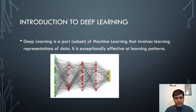Deep learning is a subset of machine learning that involves learning representations of data and is exceptionally effective at learning patterns. Deep learning involves three or more neural network layers. In the figure, the green strip is the input layer, the three red layers are neural networks, and the final yellow layer is the output. Deep learning is quite effective at learning patterns from input.